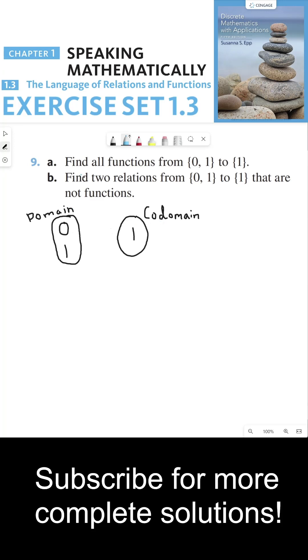And the way I think about functions are that they take all of my elements in my domain and they map it to one single element in my codomain. So 0 has to go to 1, the only one option, and 1 has to go to 1. So this right here is the only possible function from my set 0, 1 to the set 1. So that's my answer to part A.